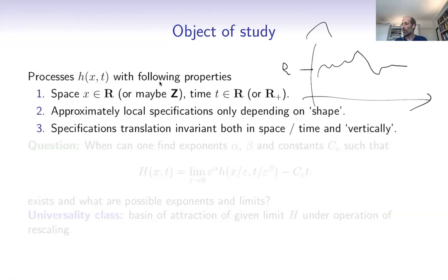So if I translate everything vertically — if I move everything up or down — the rule of how it's going to update itself should be equivariant with respect to that motion.